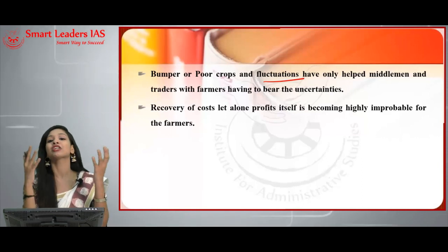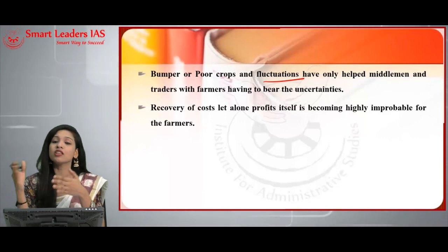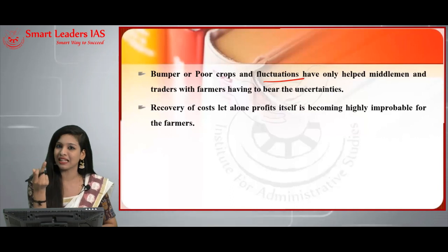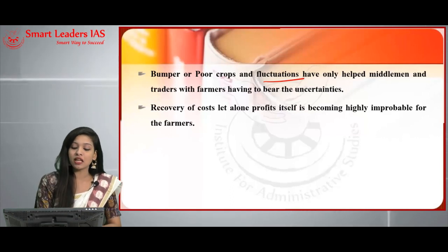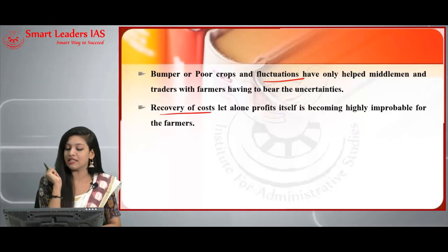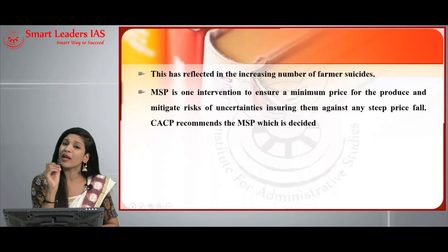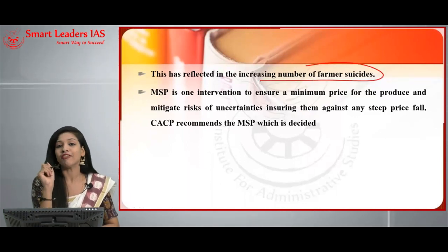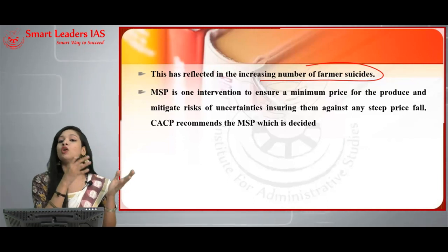When fluctuations take place — whether bumper or poor crops — the people negatively affected are the farmers; no benefit goes to them. That is the reason the government focused on increasing MSP. Recovery of cost, let alone profit, is becoming highly improbable for the farmers. This situation has literally led to an increased number of farmer suicides, which is one of the most important threats our country is facing.